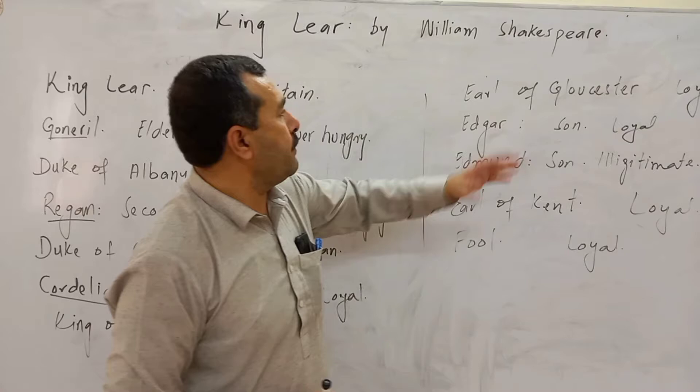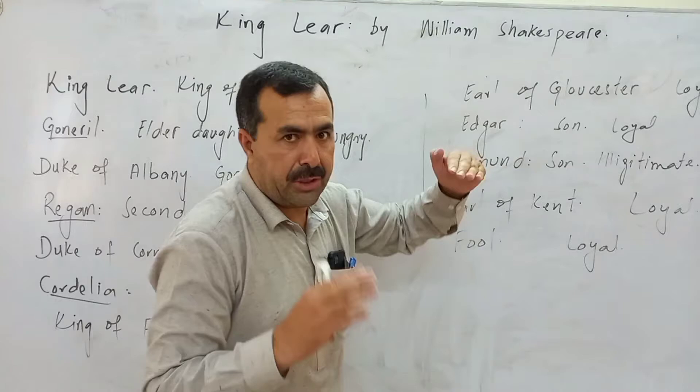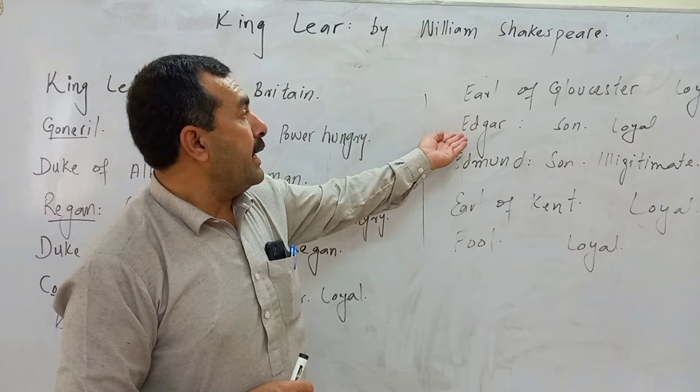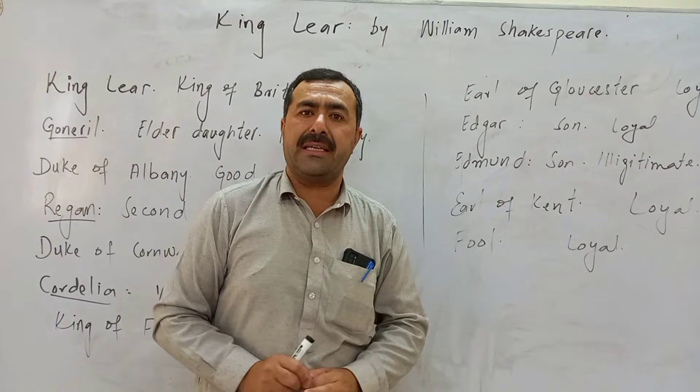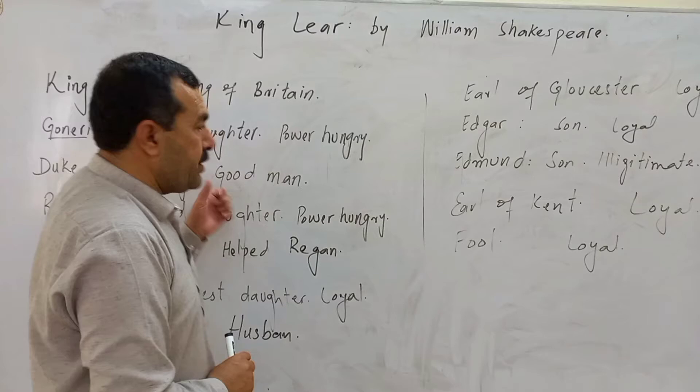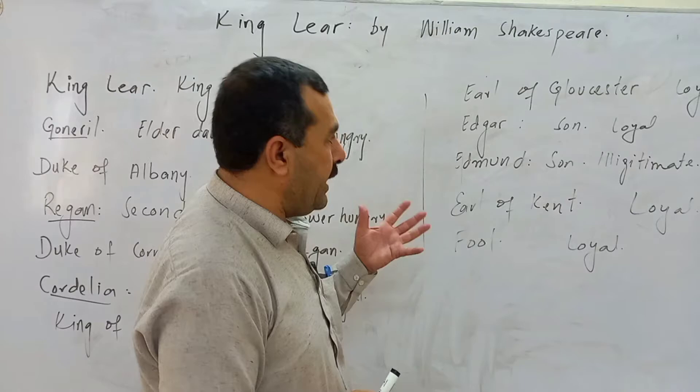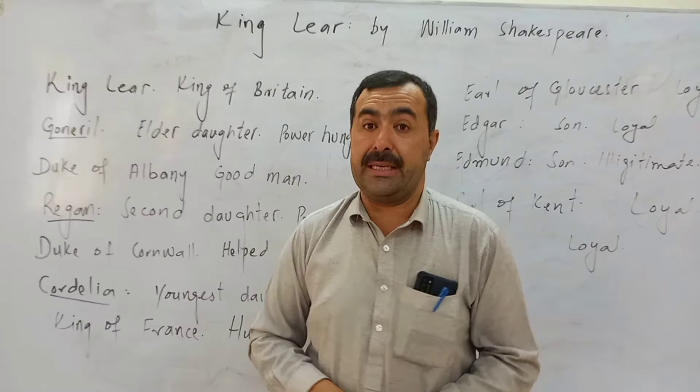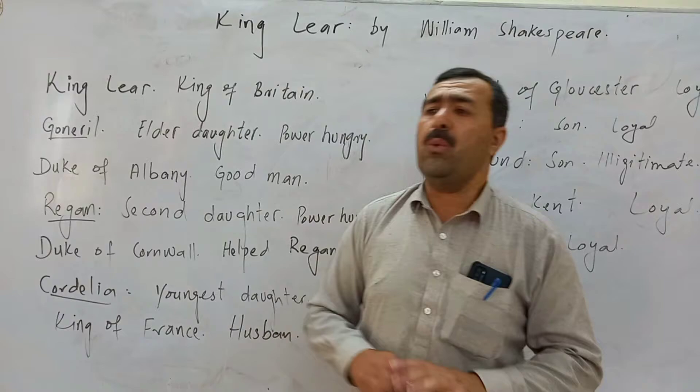The Earl of Gloucester is a loyal person in the court of Britain, very loyal to the king. Edgar and Edmund are two sons of the Earl of Gloucester. Edgar is the legitimate son and he is a loyal person. Edmund is the illegitimate son and he is not a good person — he is cunning and power hungry. He helps Goneril and Regan. Kent is also a very loyal and faithful person to the king. And the Fool is a person who is with the king at all times.